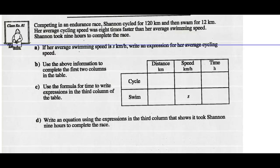Let's do example one. Competing in an endurance race, Shannon cycled for 120 kilometers and then swam for 12. Her average cycling speed was eight times faster than her average swimming speed. Shannon took nine hours to complete the race. If her average swimming speed is S kilometers per hour, write an expression for her average cycling speed. Well, it says her cycling speed was eight times faster than her swimming speed, so that should be 8S kilometers per hour.